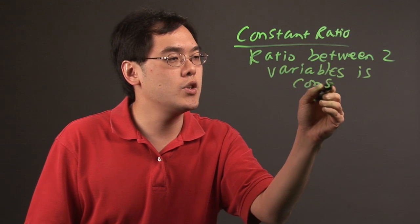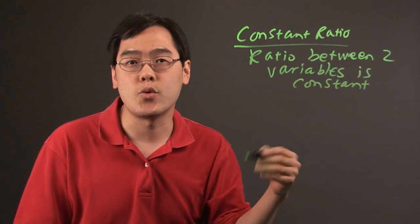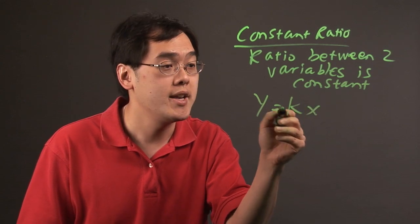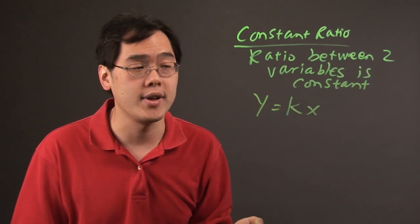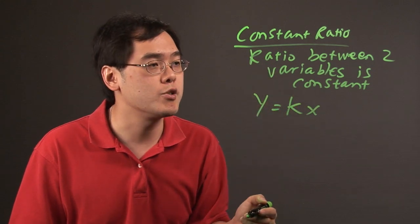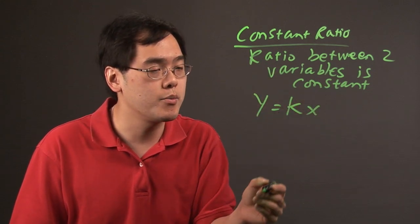Where this is used often is in the direct variation scenario where you have y equals kx. K is a constant of variation, and the reason you can say this is a constant ratio is because the ratio between these two variables is constant.